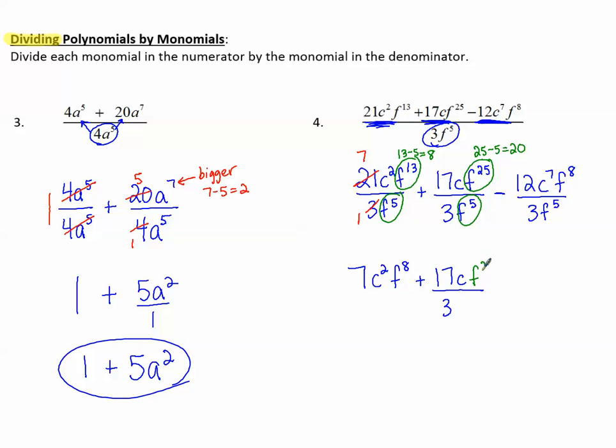Minus 3 and 12 share a common factor. 3 goes into itself once and into 12 four times. So we have 4, there's no other c's, but there are other f's. f⁸ and f⁵, 8 minus 5 makes 3, so we have f³.